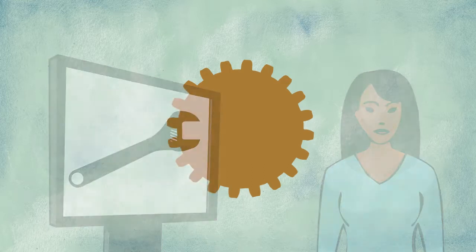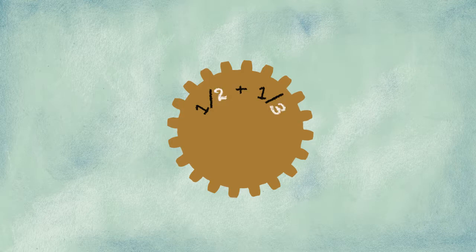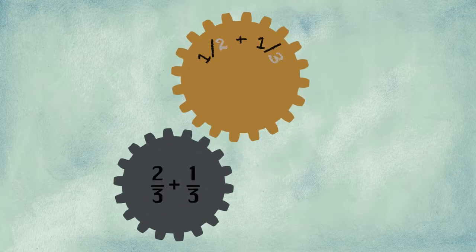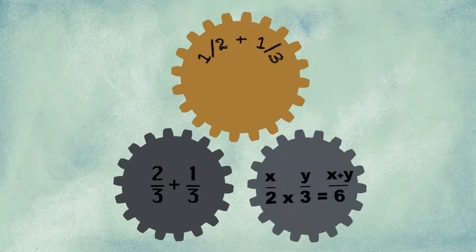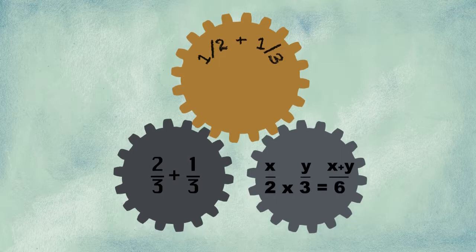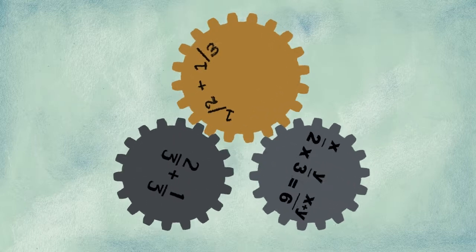Take a simple example. Imagine that you're teaching students to add fractions with different denominators. First, the students need to learn how to add fractions with the same denominator. Then they need to learn how to find the least common denominator. They can't add fractions with different denominators until they've learned both of these skills.